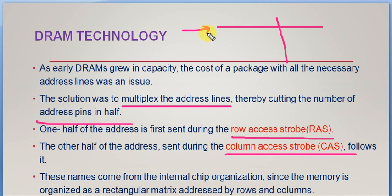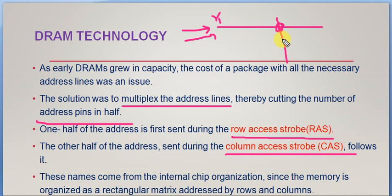As dynamic RAM grew in capacity, providing address lines for all rows became an issue. The solution was multiplexing the address lines by reducing the number of address pins. One half of the address is first sent as the Row Access Strobe (RAS) to access a particular row, and the second half is sent as the Column Access Strobe (CAS) to access a particular column within that row. These names come from the rectangular matrix organization of memory.